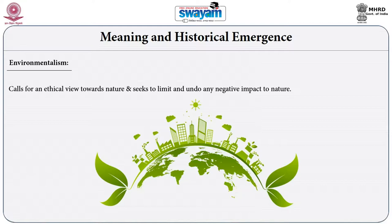Environmentalism begins with an awareness about negative impacts on nature — essentially human-generated or human-induced negative impacts. In that sense, environmentalism as a philosophy is a departure from industrialism, because it is perceived that it is the industrial way of life — especially human activities after the industrial revolution — which had severe negative impacts on nature. Environmentalism portrays an idea where these negative externalities can be dealt with, calling for an ethical view to protect nature and undo these negative impacts.